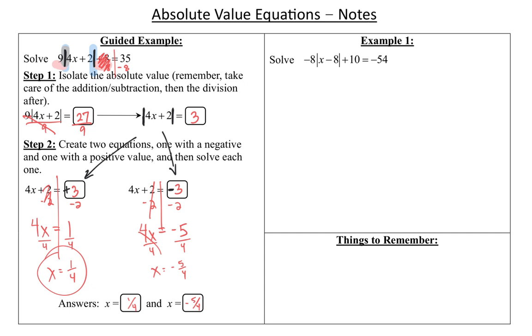So here's another example. And again, the first thing we want to do is get the absolute value by itself. So let's subtract 10. I need to get rid of that plus 10, and I'll have to get rid of the times negative 8. So there's two things I have to do to get this absolute value by itself. So I've got negative 8 times that absolute value equals negative 54 minus 10, negative 64.